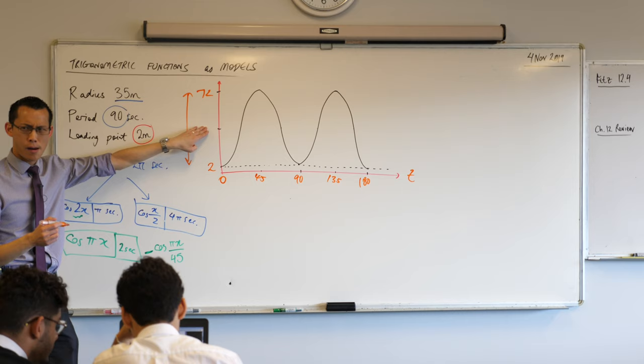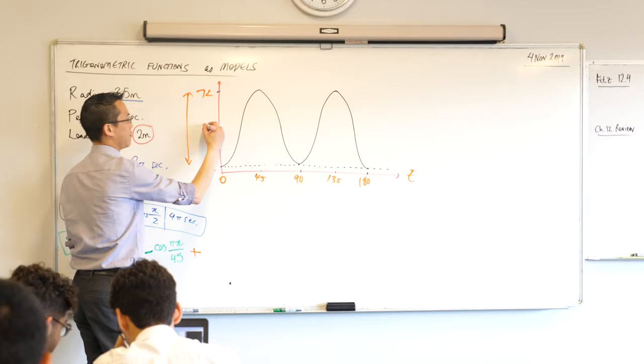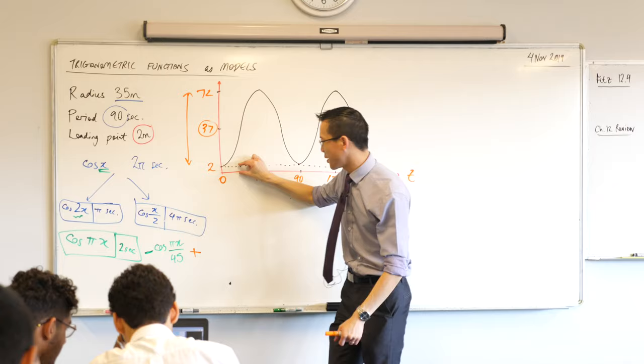This is 30... We added on something to this graph, do you remember? We went plus 37. 37, thank you. Why is it 37? Because I've got the 2 at the bottom and then here's the radius of 35. Is that okay?